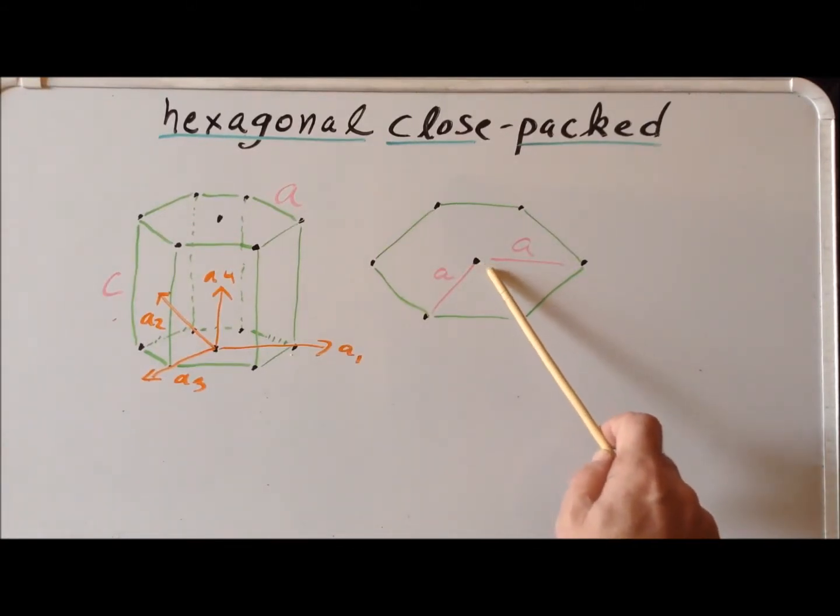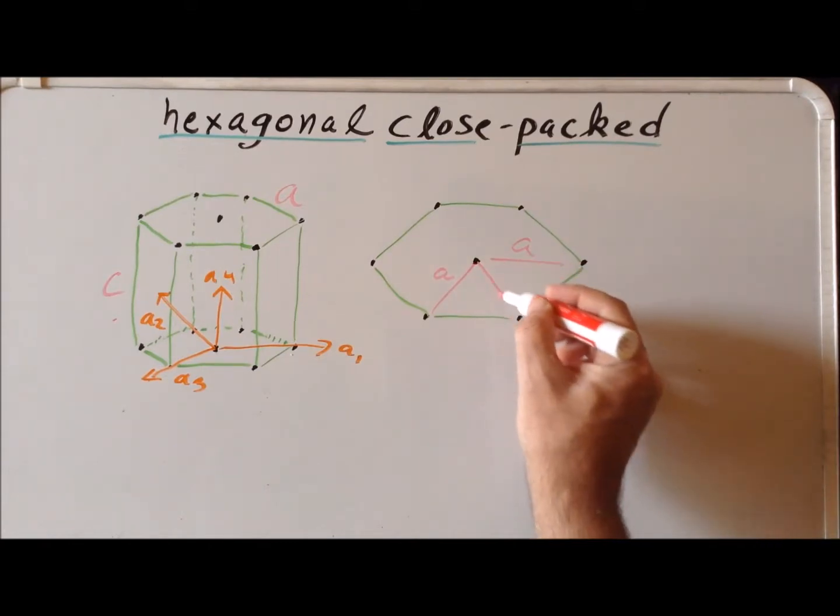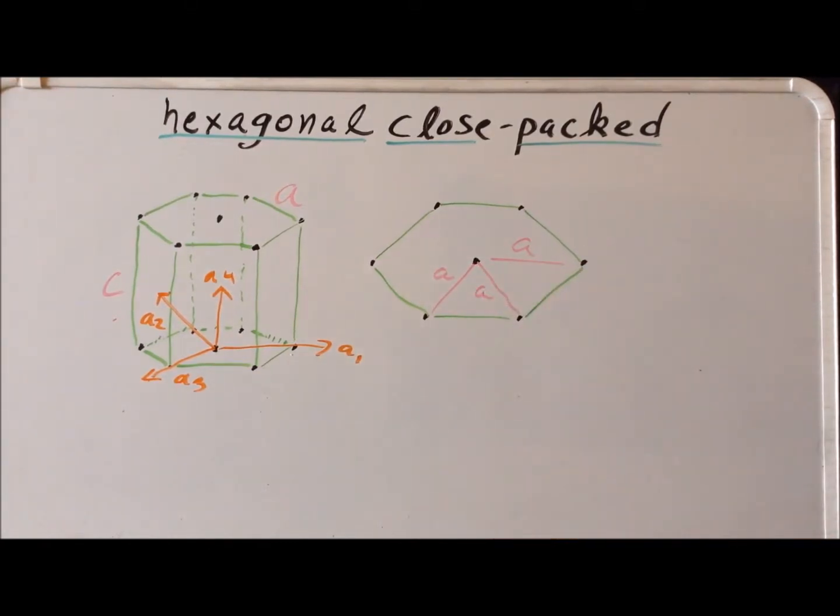And if we were to draw another line here, remind us that this length is also A. So each rhombohedral unit cell can be thought of as two equilateral triangles joined together along one edge.